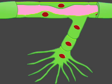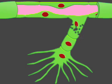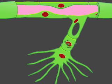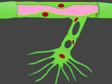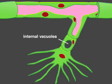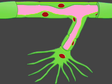The sprout begins to hollow out, forming a tube. In this process, pinocytic vesicles fuse with one another. The large vacuoles formed in this way then fuse with one another, creating a lumen that runs through the capillary sprout.